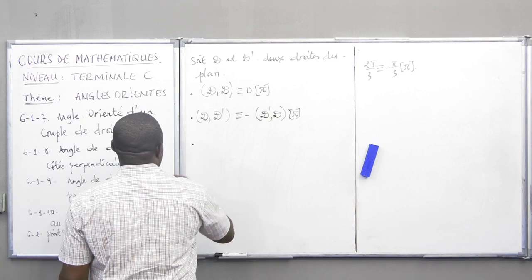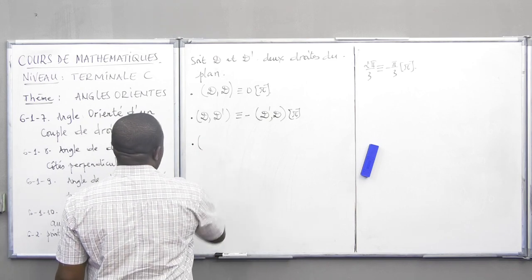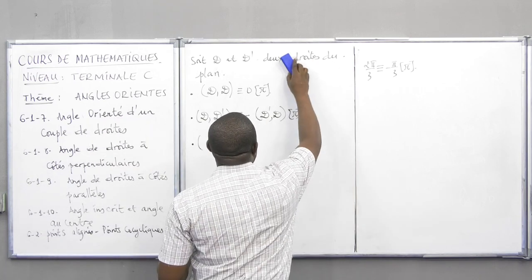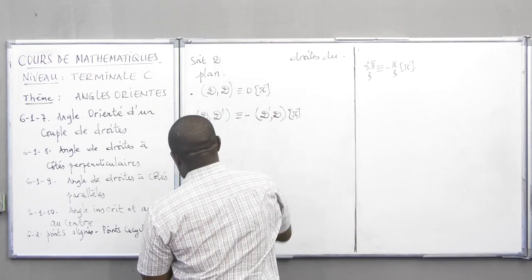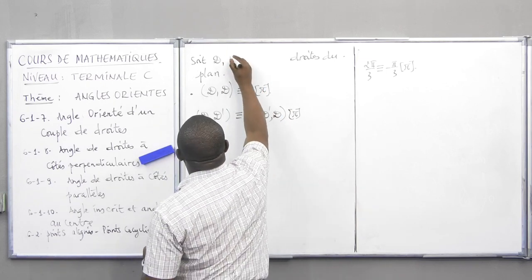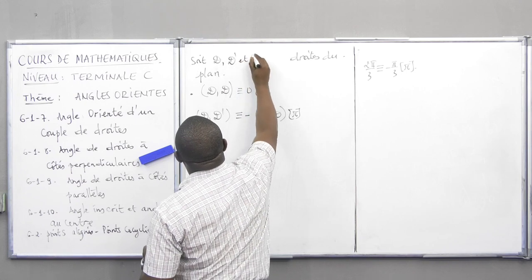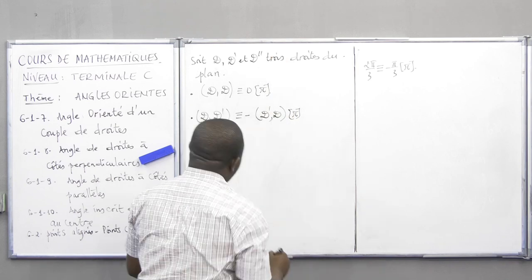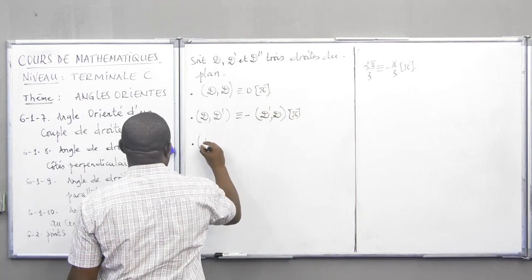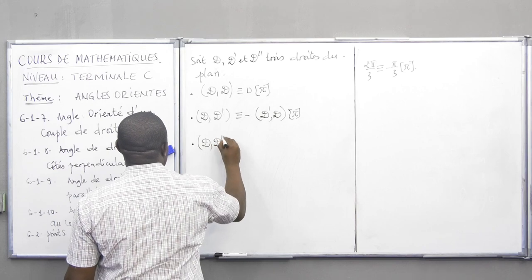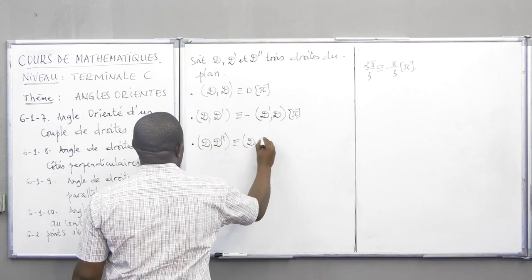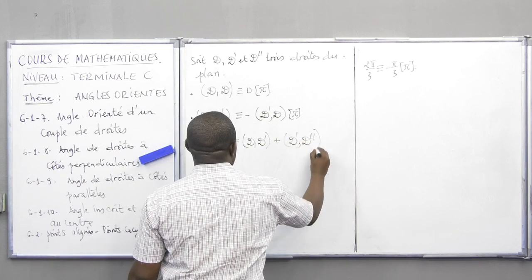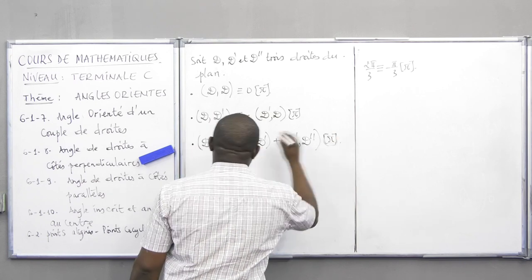On avait démontré cette propriété avec les angles orientés de vecteurs. Concernant la relation de Chasles : si nous prenons trois droites D1, D'1 et D''1, alors l'angle (D, D'') est congru à l'angle (D, D') plus l'angle (D', D'') modulo π. Voilà quelques propriétés qu'on peut énoncer, et les autres seront vues au fur et à mesure.